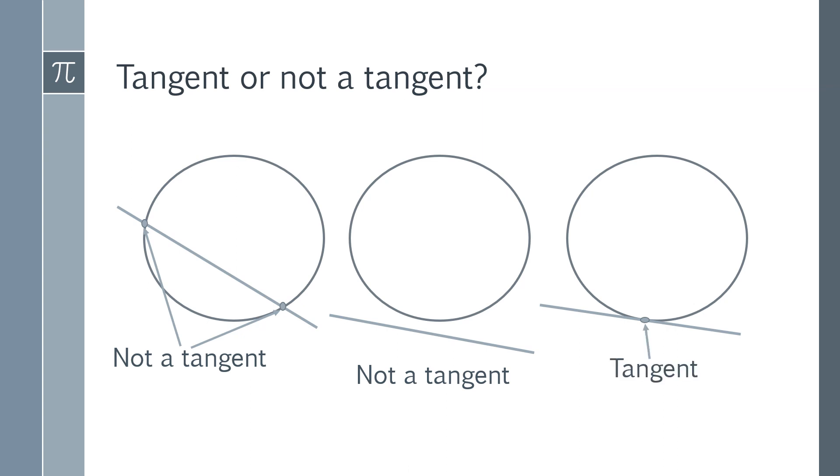When you're doing your proof, what you're trying to do is show that it's the third case where you have a tangent, and show that it's not the other two cases which are not tangents. The result of this proof is going to tell you which of these situations you have.